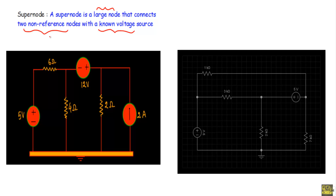A supernode connects two non-reference nodes through a known voltage source. We assign node voltages: node number one has voltage V1, and node number two has voltage V2. Node one and node two are both non-reference nodes, while the ground is the reference node.